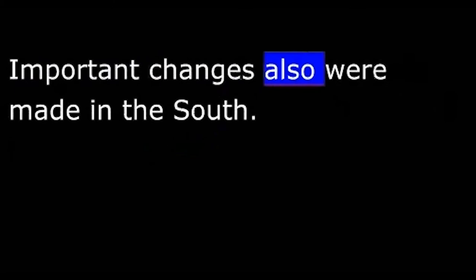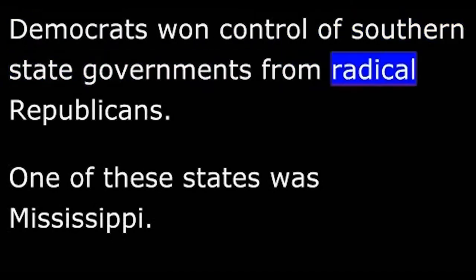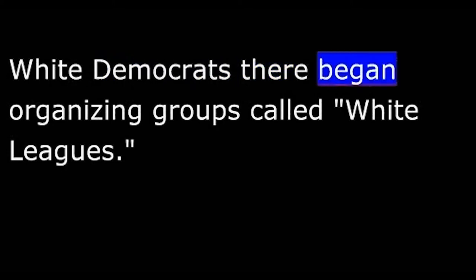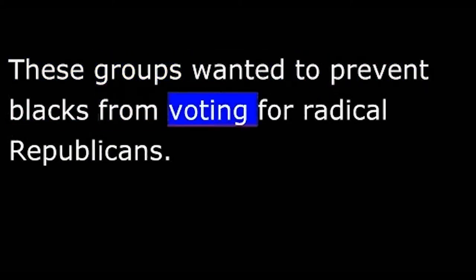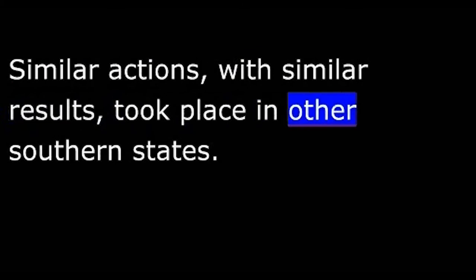Important changes also were made in the South. Democrats won control of southern state governments from radical Republicans. One of these states was Mississippi. White Democrats there began organizing groups called White Leagues. These groups wanted to prevent blacks from voting for radical Republicans. They started riots in which many blacks were killed. They also used economic power against blacks. These efforts succeeded. Most blacks were too afraid to vote. The Democrats took control of both the Mississippi legislature and the governor's office. Similar actions with similar results took place in other southern states.